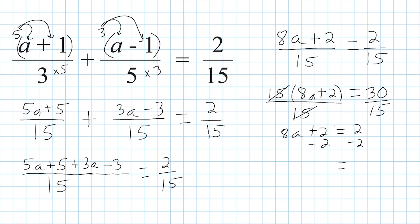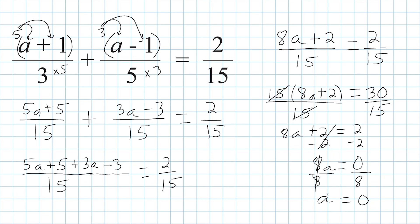That leaves us with 8a equals 0. The only thing you can multiply 8 by to get a product of 0 is 0. So if we divide both sides by 8, we get 1a, and 0 divided by 8 equals 0. So a equals 0.